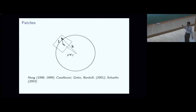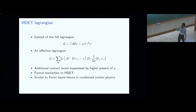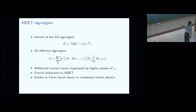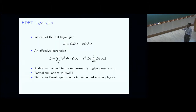You can simplify the Lagrangian to a form that some people working with high-density effective theories might recognize — it's analogous to Heavy Quark Effective Theory, where instead of the heavy quark mass you have the chemical potential. The idea is very similar: you take out the fast-moving mode and write only a Lagrangian of the slow-moving mode. V is the velocity that tells you the position on the Fermi surface. You also get additional interaction terms — for example, two-gluon interaction terms.